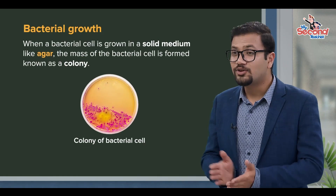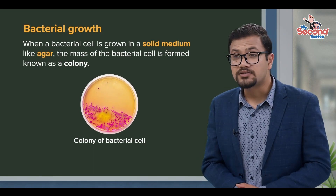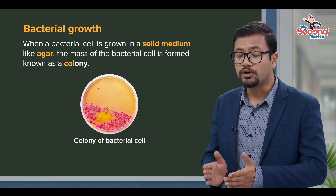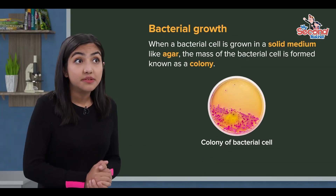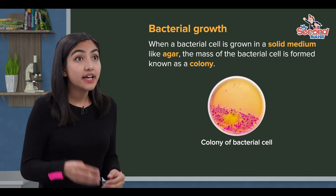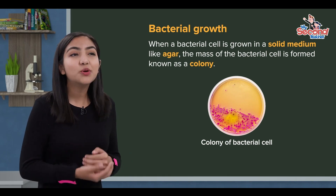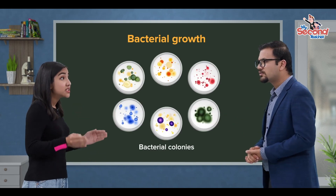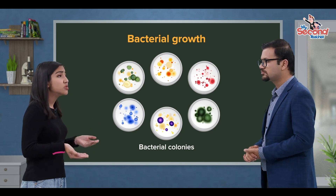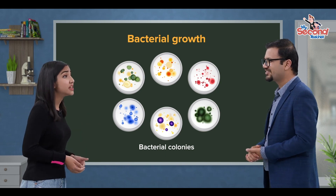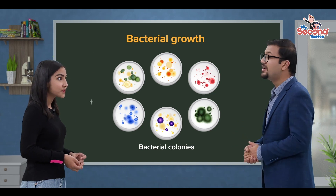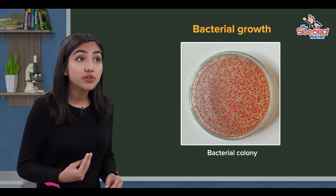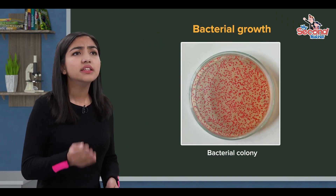If bacteria grow in a solid medium, the bacterial cells divide — 1 becomes 2, 2 becomes 4 — forming a mass. So the bacterial cells form a mass colony. In the solid medium, bacterial cells grow as a mass, and this mass of cells is called a colony. Millions of bacterial cells make up a single visible bacterial colony.